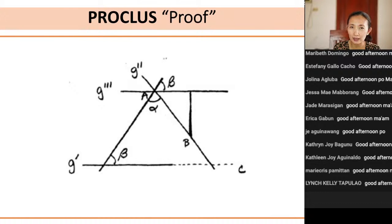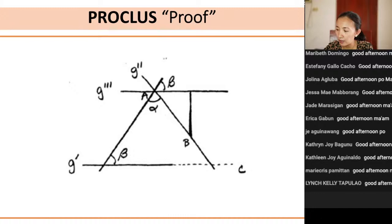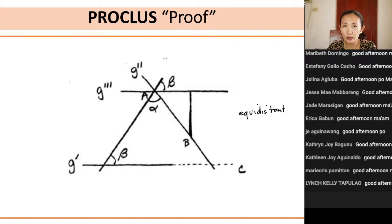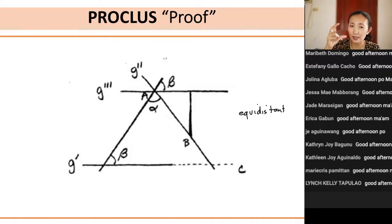When we speak of parallel lines, it simply means that they lie on the same plane and they do not meet. The problem is that Proclus assumed that parallel lines are everywhere equidistant — that was his assumption. But there is nothing in the definition of parallel lines that says they are equidistant from each other. What was mentioned only is that they do not intersect. There is nothing in the definition which states about distance between the two lines.